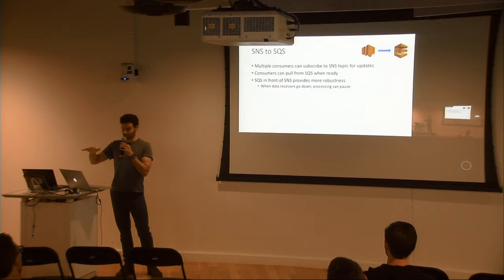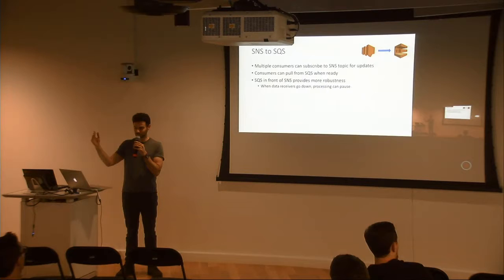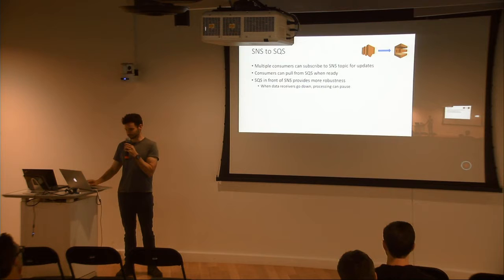SNS is a pub-sub system and SQS is Amazon's queue system. For our approach, we wanted to build a pipeline that was flexible and allowed different people on our analytics staff to set up their own queue. So we fanned out the SNS topic over to different queues — in case someone else wanted to subscribe to our topic, they could set up another queue easily.